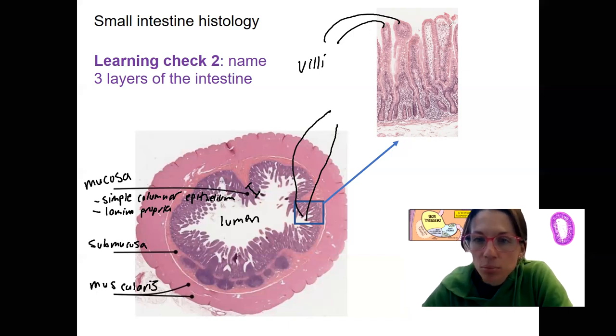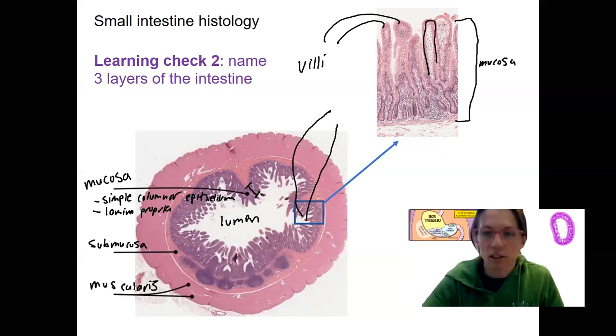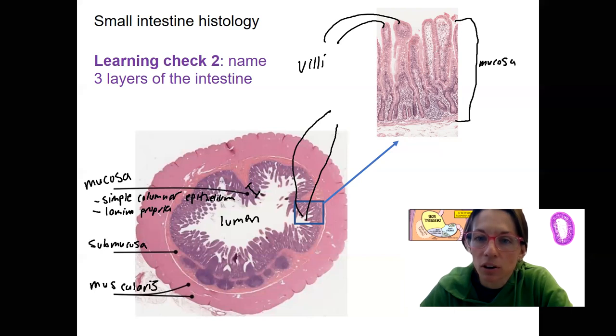Here we can also break down, so this whole thing here is our mucosa. The simple columnar epithelium is just this layer around here. Let me do that in a different color. Let's do purple because it often stains purple because of those nuclei. The nuclei stain purple. Simple columnar epithelium.